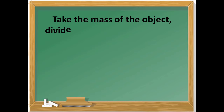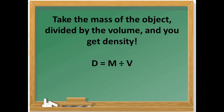You take the mass of the object, then divide it by the volume, and you get density. Density equals mass divided by volume. If you need help remembering this, draw a heart really quick.